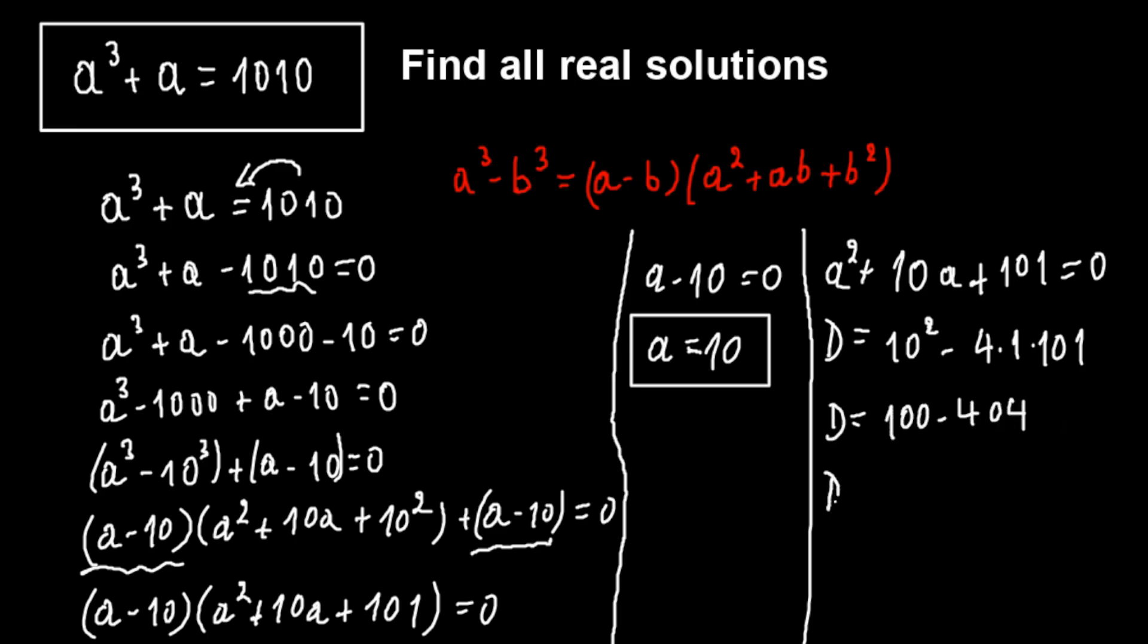So this equals minus 304, which is less than 0, so in this case we have no real solutions.